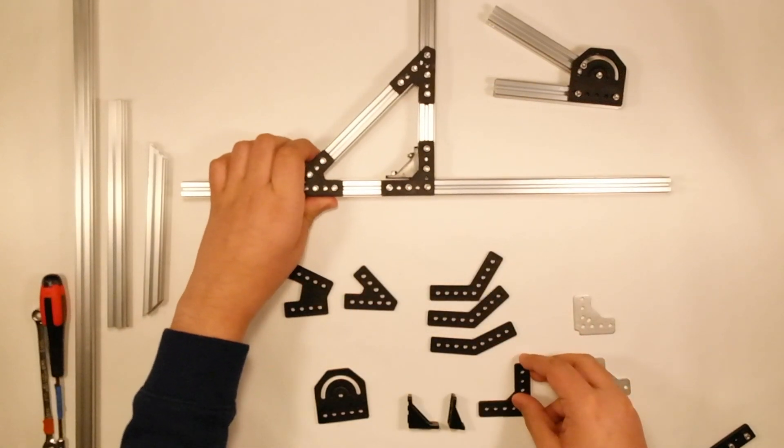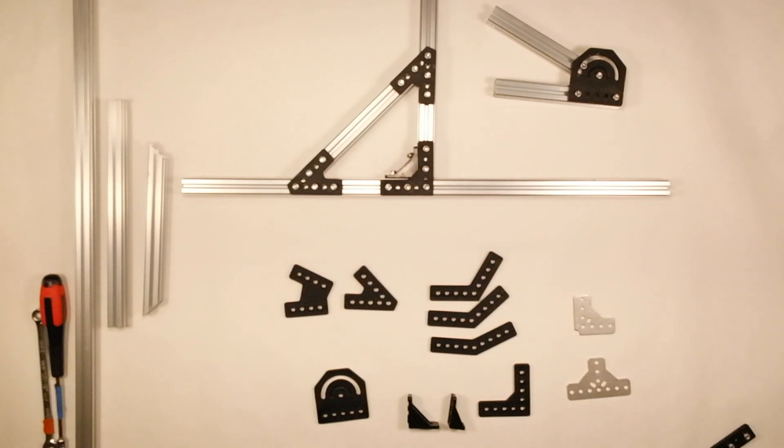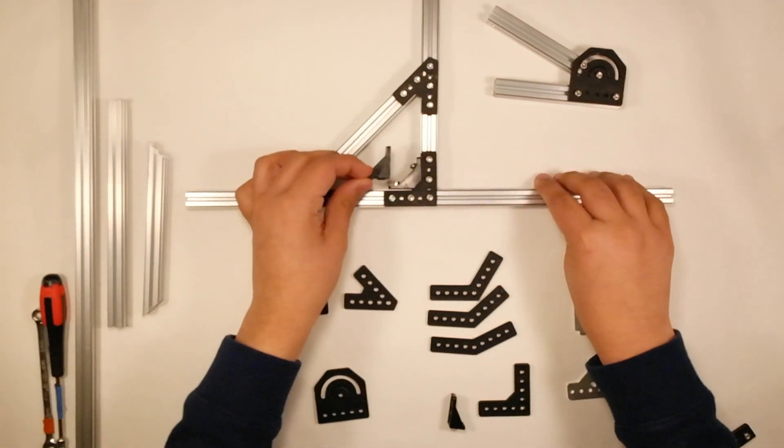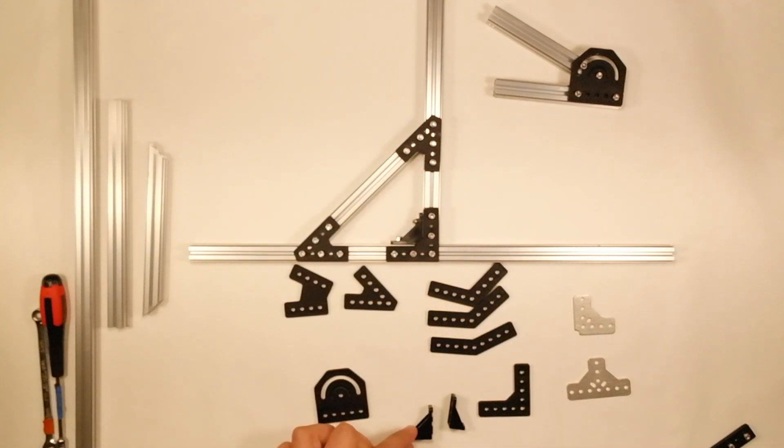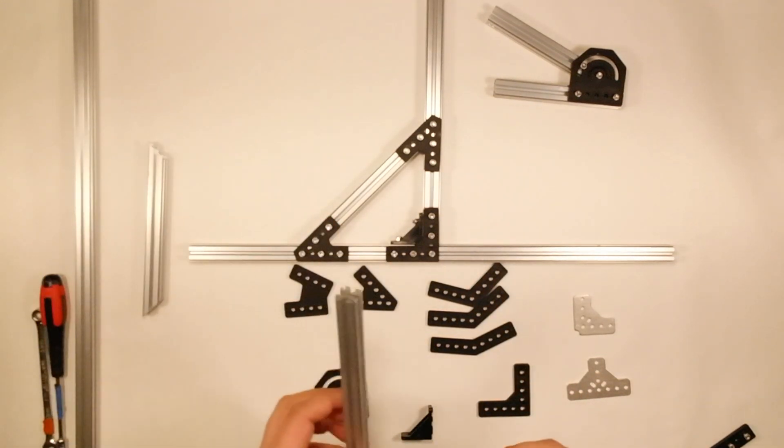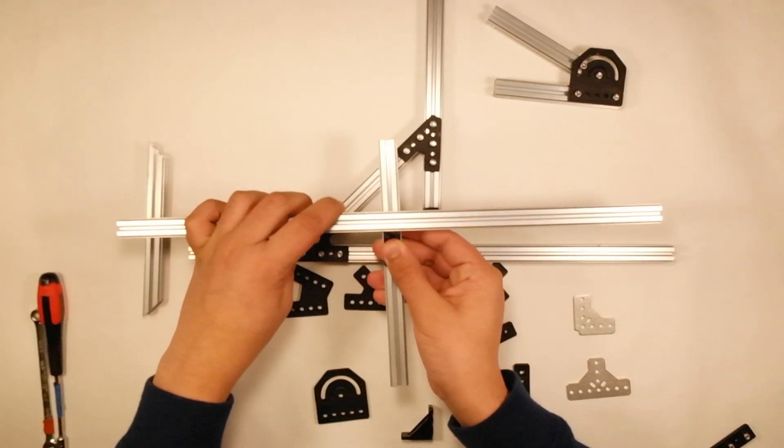In addition to that, there are two brackets here, the inside corner bracket and the lap bracket. The inside corner bracket is used to strengthen your 90 degree angles, for example, you can see it's being used right here. The lap bracket is to put two pieces of REV extrusion perpendicular to each other, like you can see here.